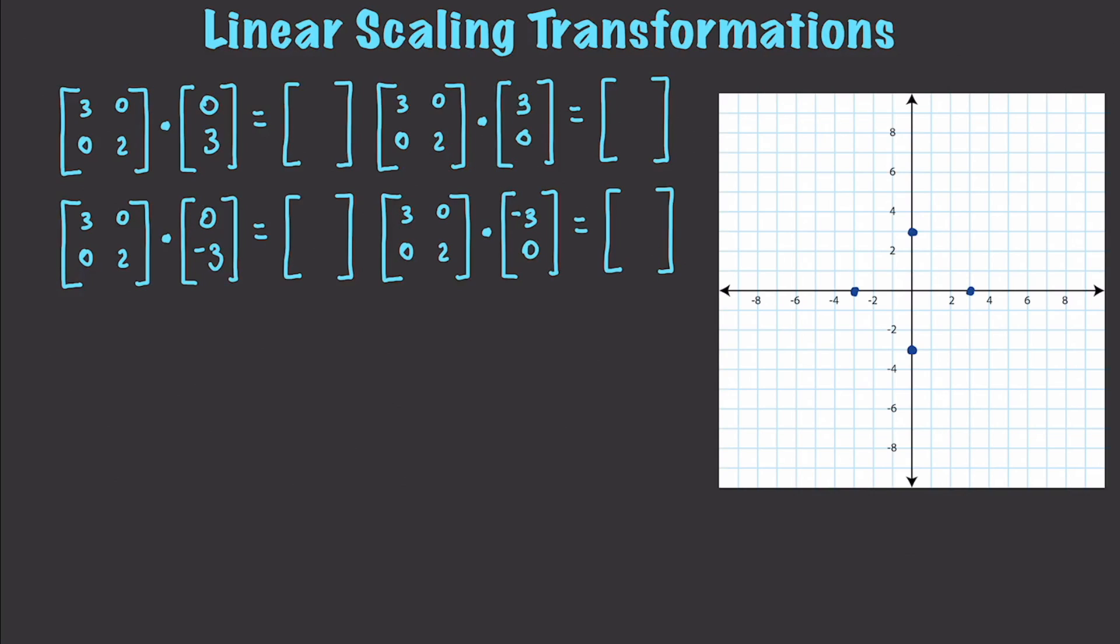And if we perform these calculations, this is going to give us a new result of 0, 6. This is going to give us 0, negative 6. This is going to give us a result of 9 and 0, negative 9 and 0. And of course, we can go and plot these new points in. And you can see how easy it was to make these nice scaling changes. And of course, you can combine scaling with rotations and so forth and so on.